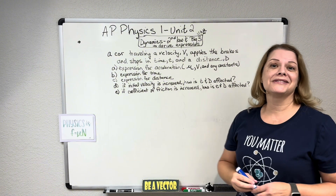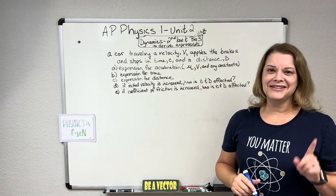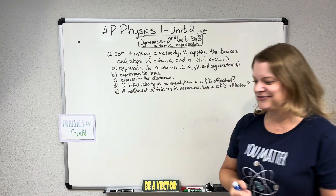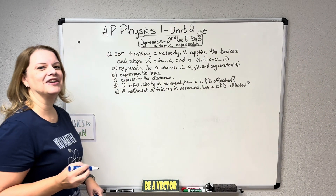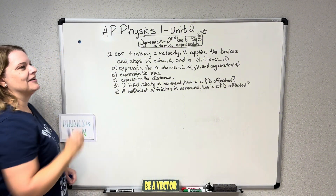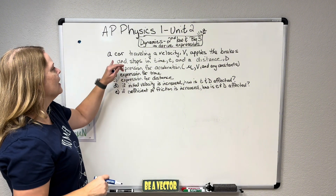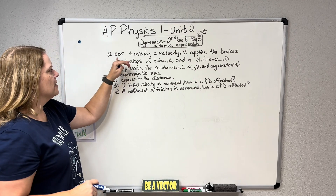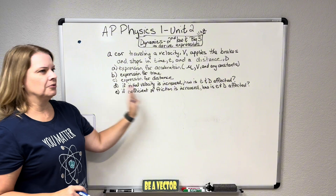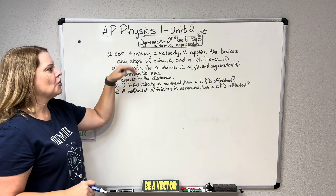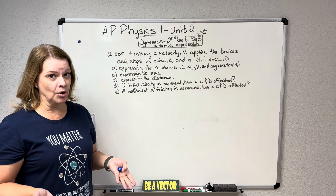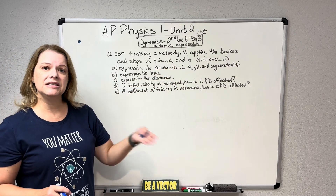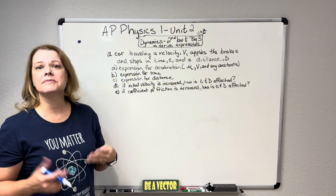Because this is dynamics, we always start with an FBD — it's not a disease. I know that 'D' in a lot of medical terms means disease, but it's a good thing in physics. I have a dot here, which is how I start all of our free body diagrams. The problem — I've written this a little small so I can have some board space — is: we have a car traveling at velocity V. It applies its brakes, then stops in a time T and a distance D.